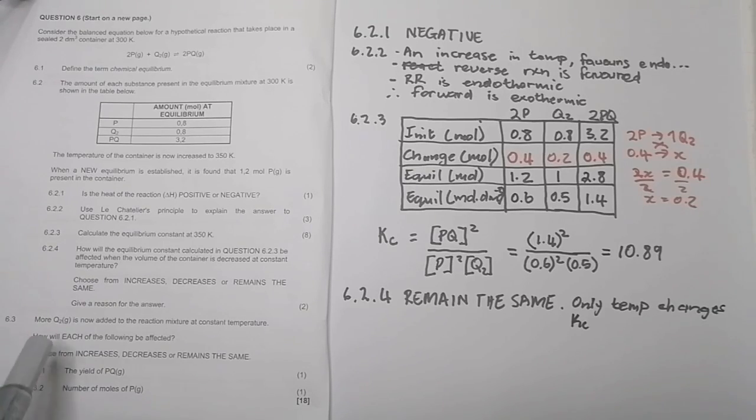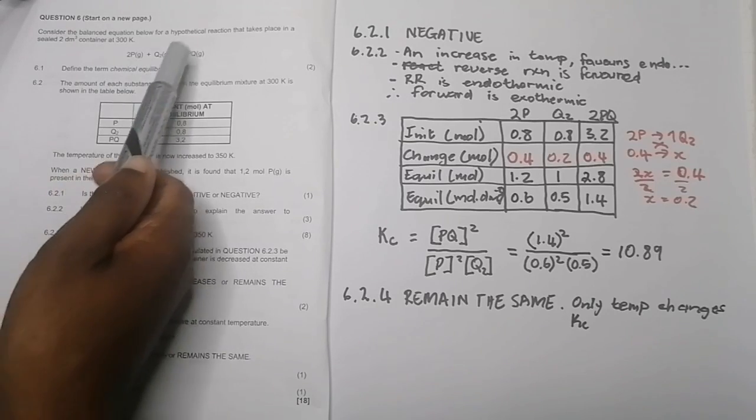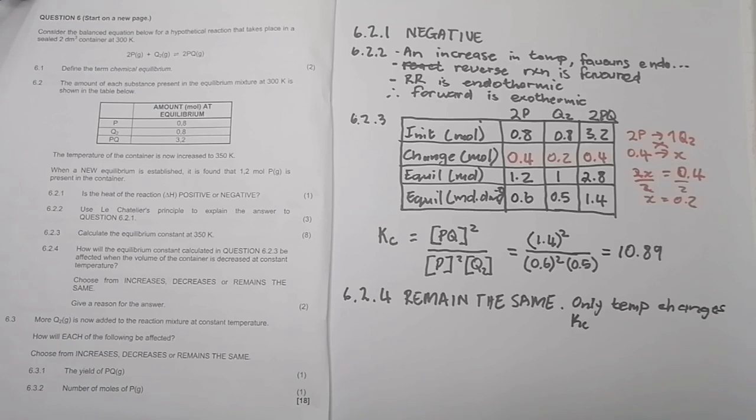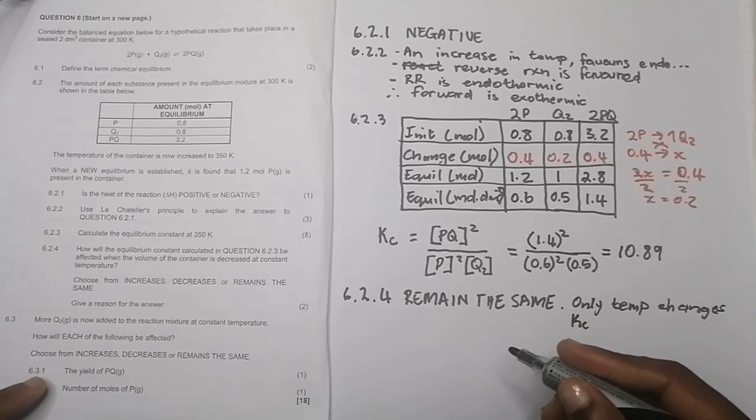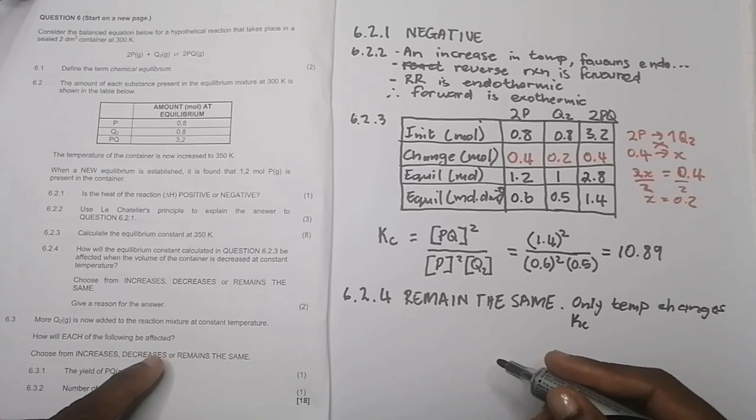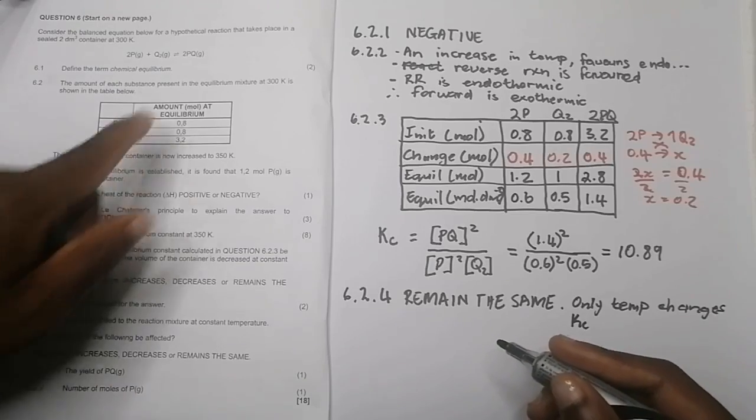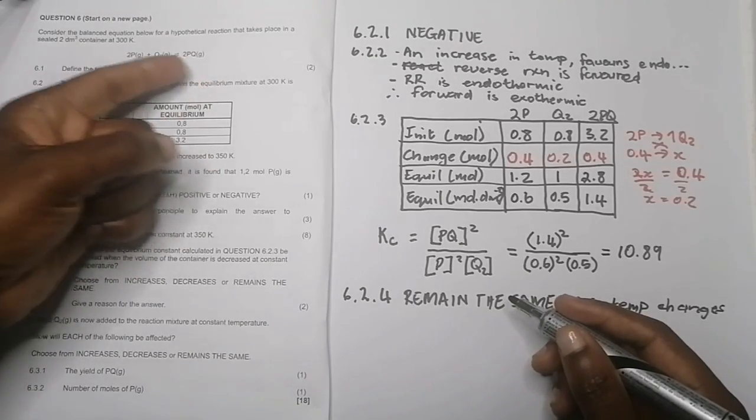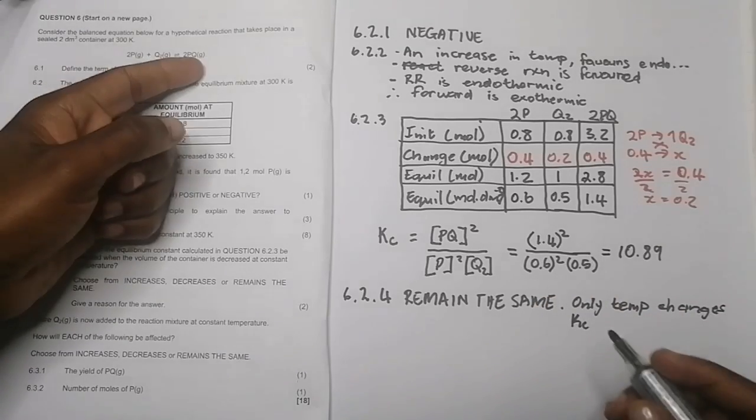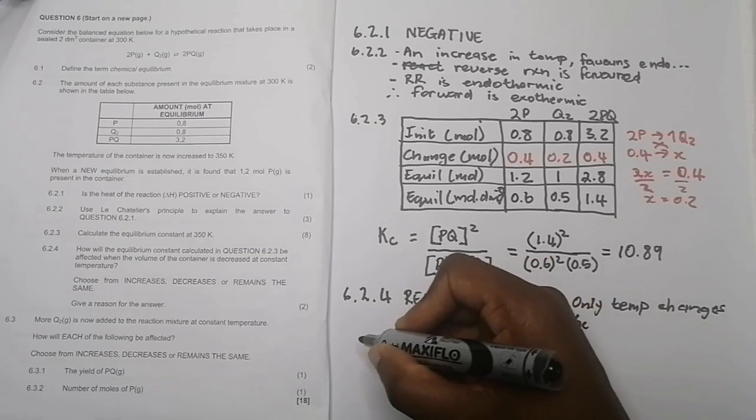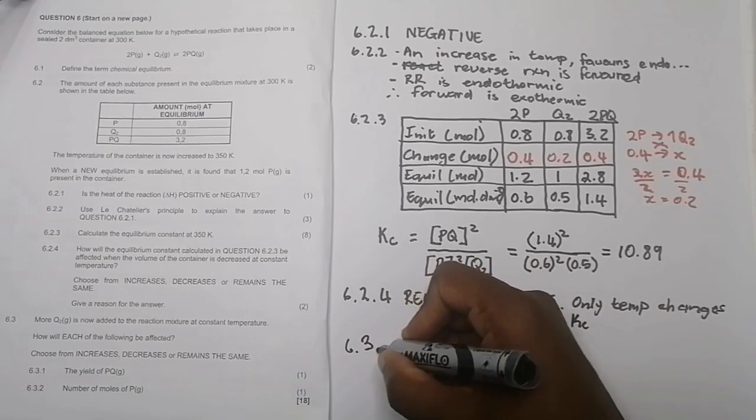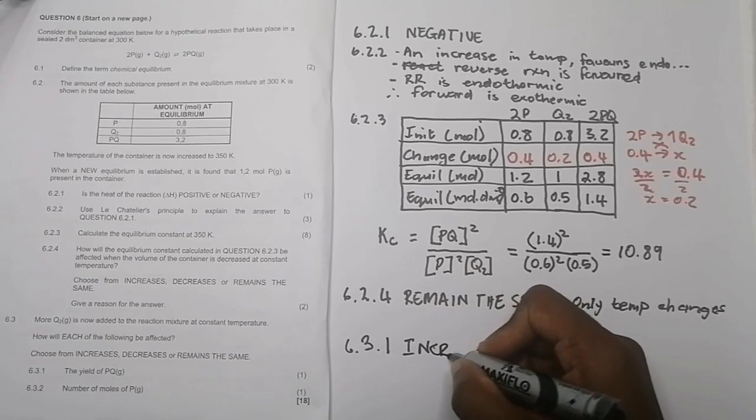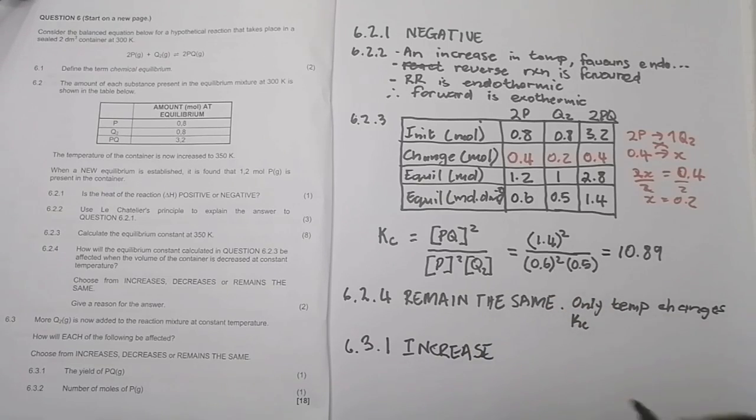And then 6.3. So they say more of Q2 is now added in the reaction mixture at constant temperature. So there it is. There's our equilibrium there. We are adding more of Q2. If you remember my Pac-Man analogy, if you think about my seesaw analogy, in this case, they say how will each of the following be affected? Choose increase, decrease, or remain the same. The yield of PQ. Of course, an increase in the amount of Q2 in that case will favor the forward reaction. So in that case, if we favor the forward reaction, we will produce more of PQ. So in this case, it means that the yield of Q2 should actually increase. So that should increase there. I'm thinking someone, as they see this response or this answer to this question, they'll be actually very happy to see that they actually did well.